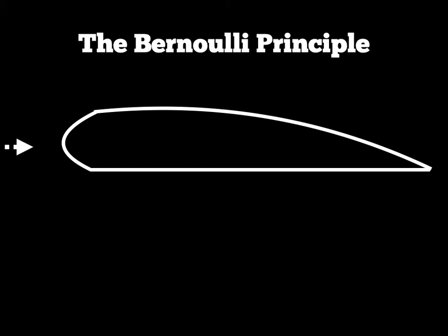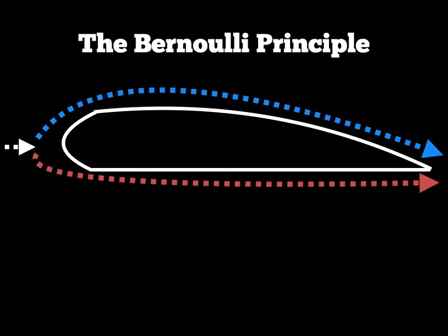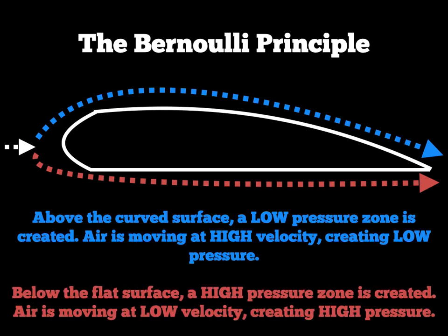Going back to our aerofoil shape: we've got air travelling over the top of the curve with high velocity, and air travelling underneath the curve with low velocity. Air above the curved surface has high velocity, which according to our rule creates low pressure — so the blue line has high velocity but low pressure. Logically then, the red line has lower velocity than the blue line and therefore higher pressure. So the red line is low velocity but higher pressure.